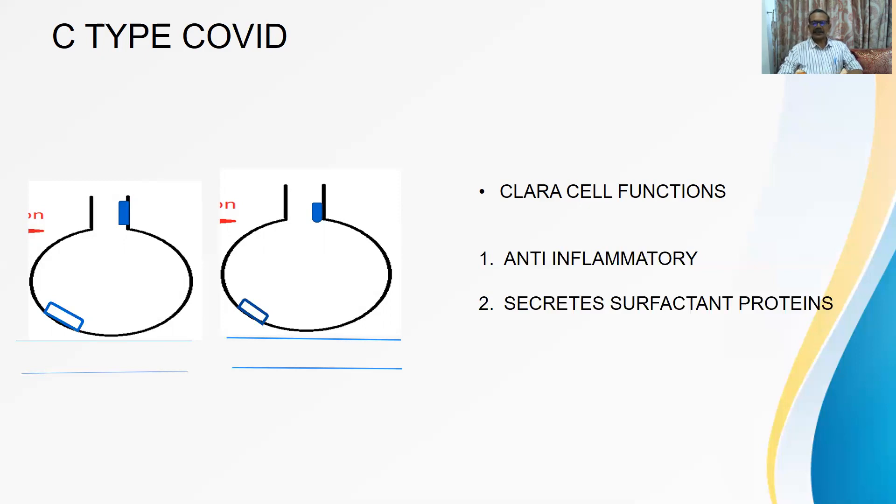So this CLARA cell is located at crucial juncture and is acting in tandem with one more colleague, that is pneumocyte type 2. Now this pneumocyte type 2 releases, secretes surfactant. This surfactant is very important to keep the alveolus open, but it is very unstable. The stability is provided by surfactant proteins, but the surfactant proteins are liberated by this CLARA cell.